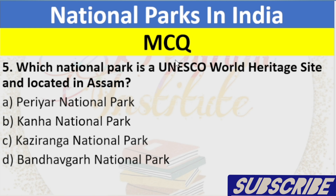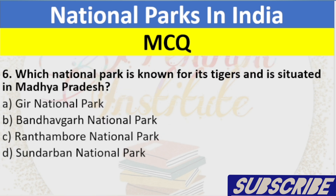Question 5: Which National Park is a UNESCO World Heritage Site and located in Assam? A. Periyar National Park, B. Kanha National Park, C. Kaziranga National Park, D. Bandhavgarh National Park. Answer: C. Kaziranga National Park.